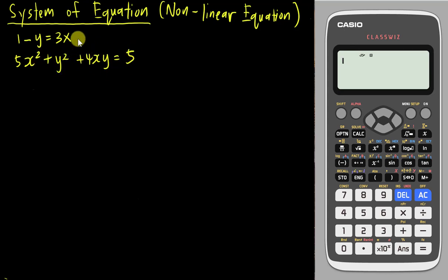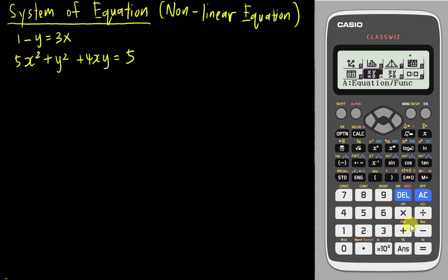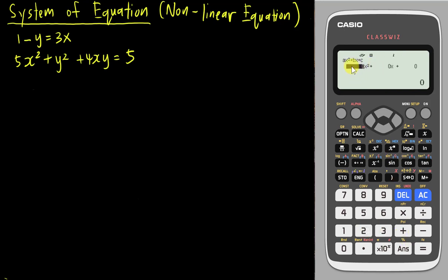When we solve the quadratic equation, the common approach is to go into the menu, go into the equation section, look for the polynomial, and choose degree 2 to insert our a, b, and c values to find both x answers. You can do this, but you always need to substitute the y into the equation to make the whole equation into x², then find a, b, and c before you can use the polynomial method. In this video I will teach you another method to solve this kind of question.